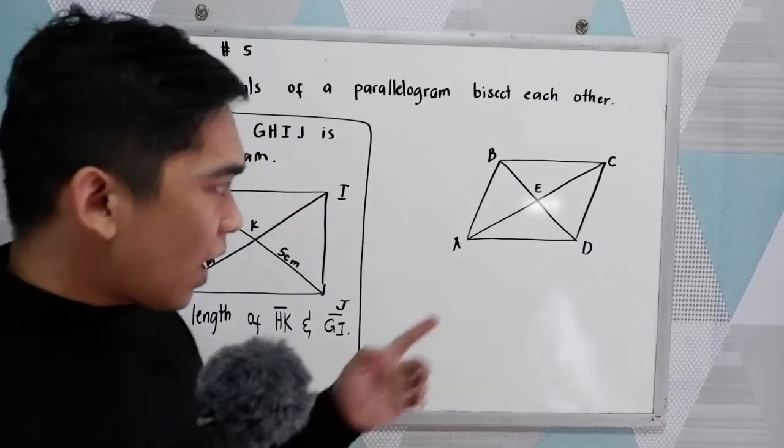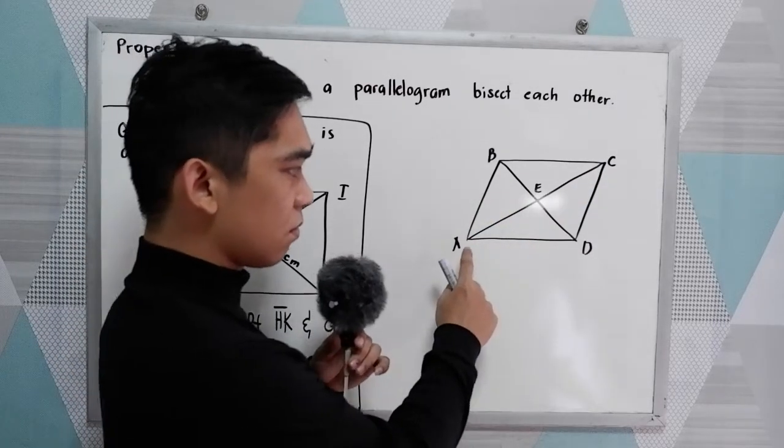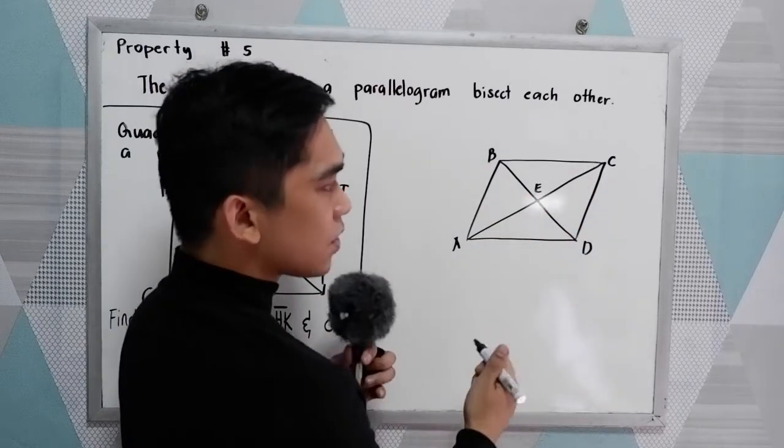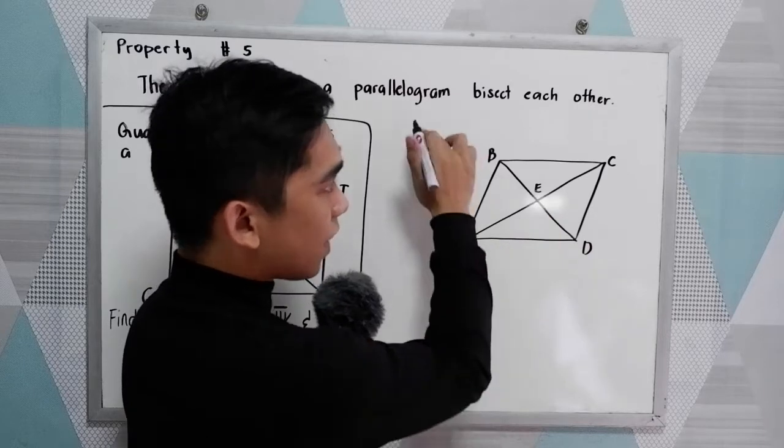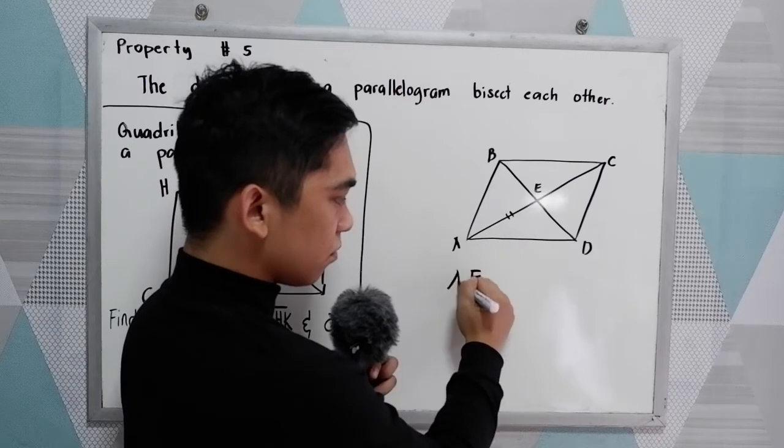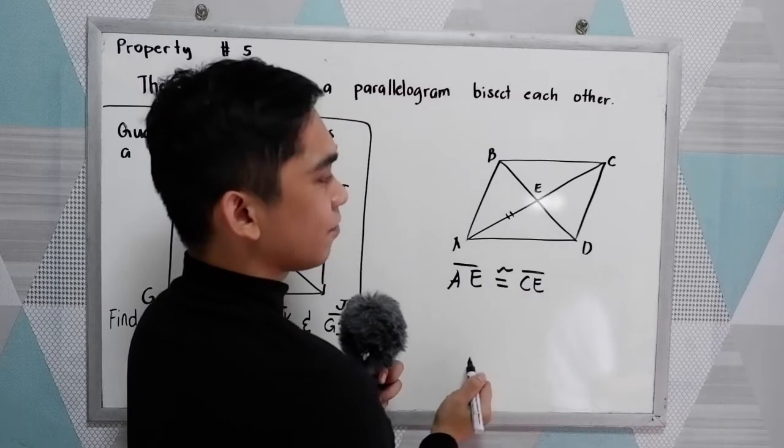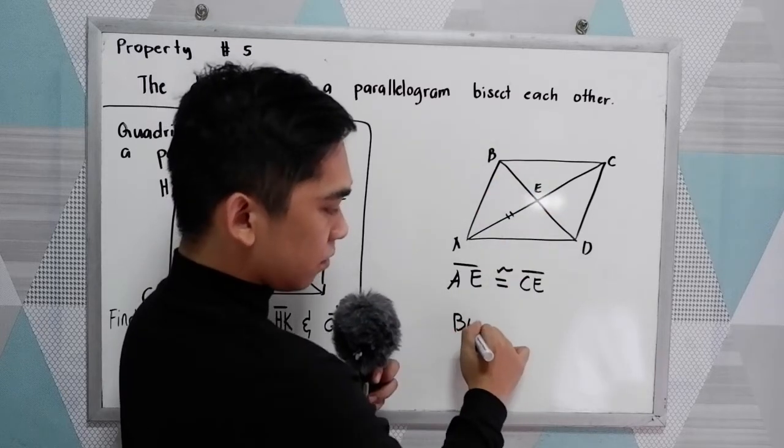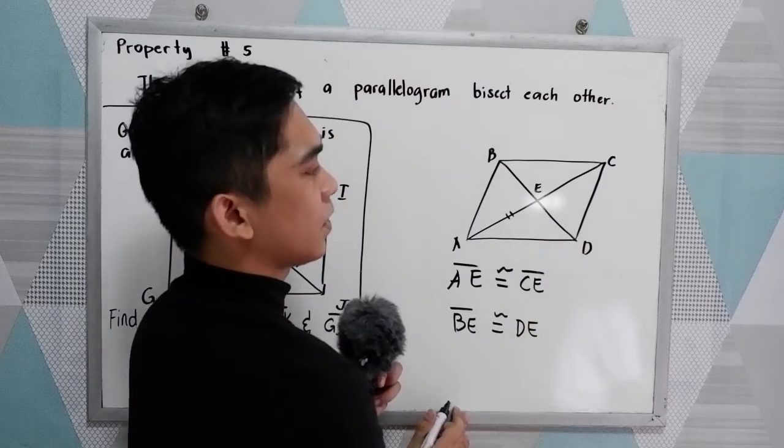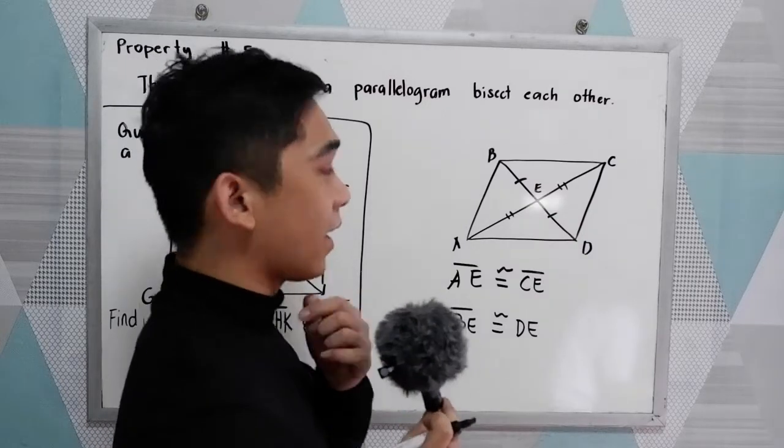That means if we have our parallelogram A, B, C, D, and we have diagonals AC and BD, then following our property number 5, AE is congruent to CE, and BE is congruent to DE. So the diagonals of a parallelogram bisect each other.